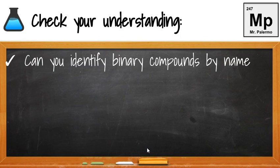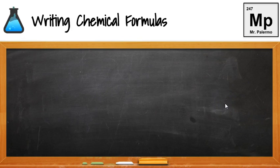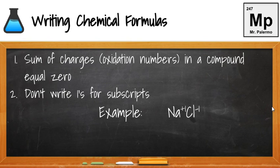Now let's look at writing chemical formulas. Recall that the sum of charges, or oxidation numbers, in a compound must equal zero — so all compounds are neutral. Also recall that we don't write ones in chemistry for subscripts or coefficients.